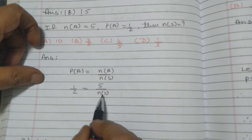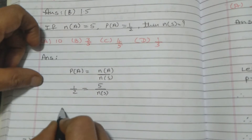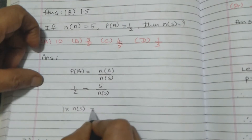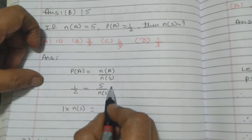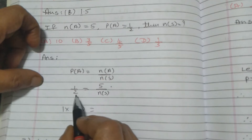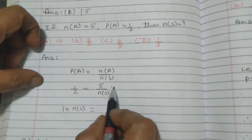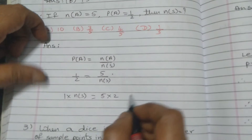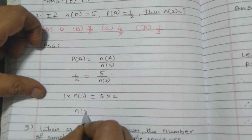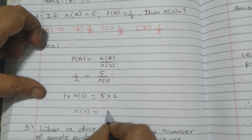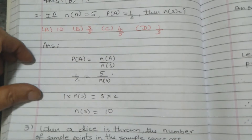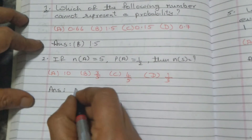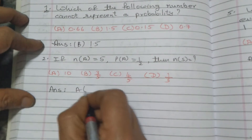Cross multiply NS. So 1 into NS equals 2 in the numerator on the right-hand side. When 2 comes over, it becomes 5 into 2. Therefore NS equals 10. So the value of NS is 10, and the correct option is A, that is 10.